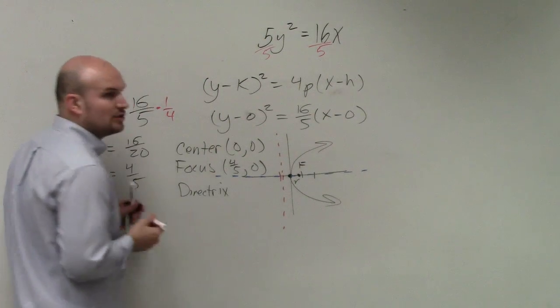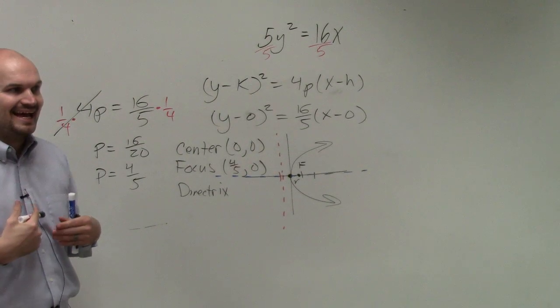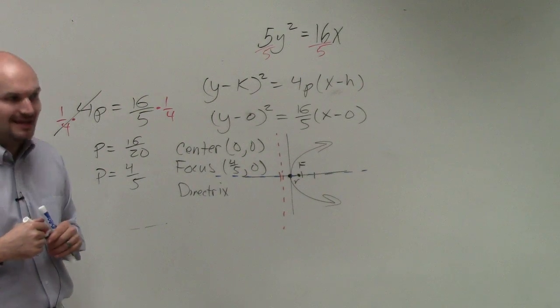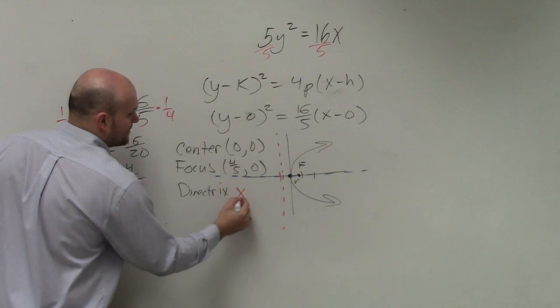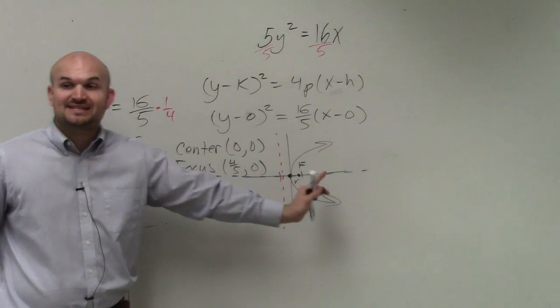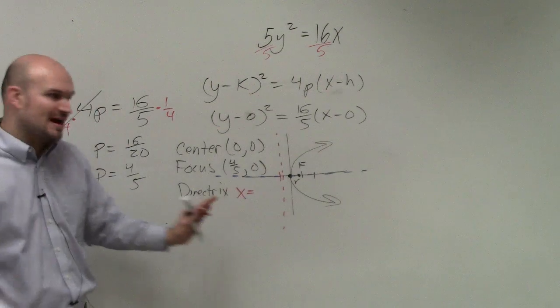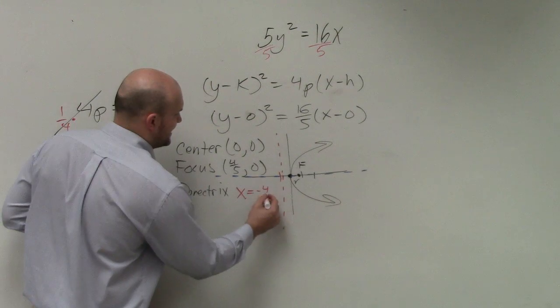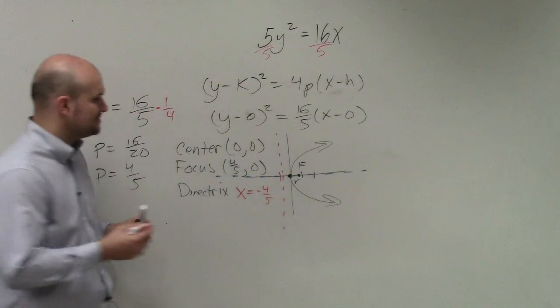So to represent vertical lines, we need to write an equation as x equals. And it's going to be the same distance, but in the negative direction. So it would be x equals negative 4 fifths.